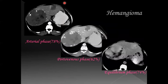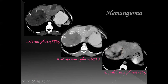This is a case of hemangioma where you can see peripherally discontinuous nodular enhancement in the arterial phase, showing progressive centripetal filling in the portal venous phase, and on the equilibrium phase it shows almost complete hyper-enhancement of the lesion, which is very typical of hemangioma.